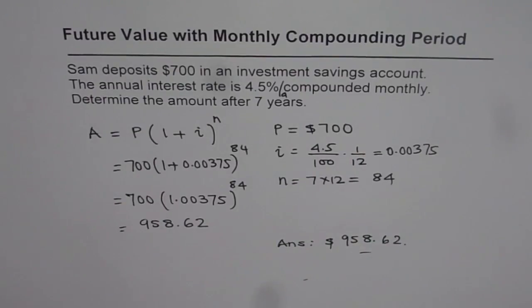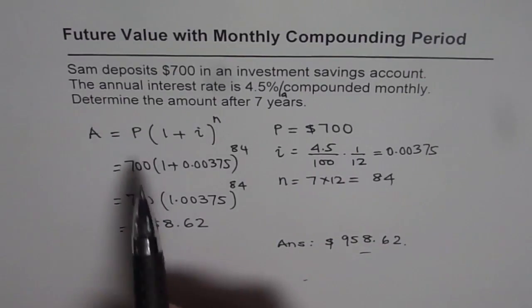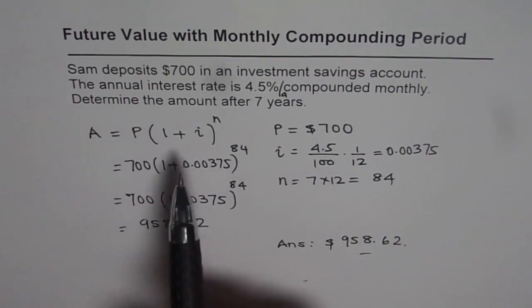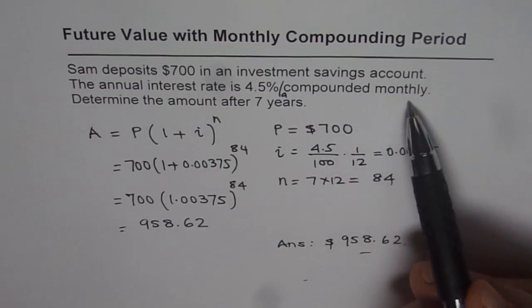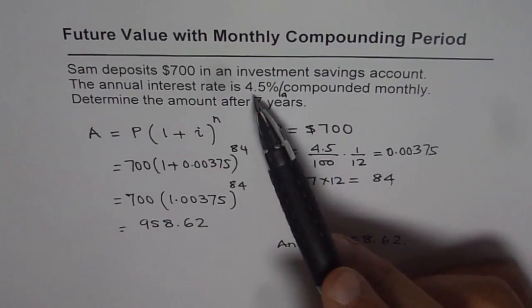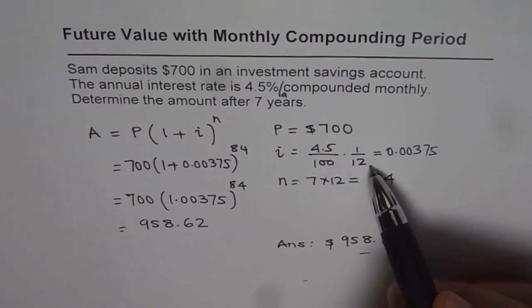Now let us go through it once again. In the formula P is the amount invested which is 700. I is interest during the compounding period. Since the compounding period was monthly we have to divide this by 12 also. That is very important.